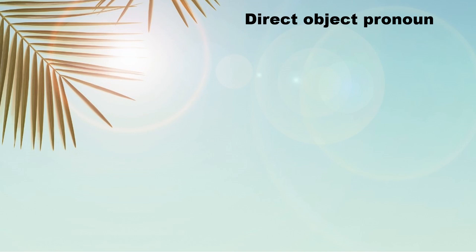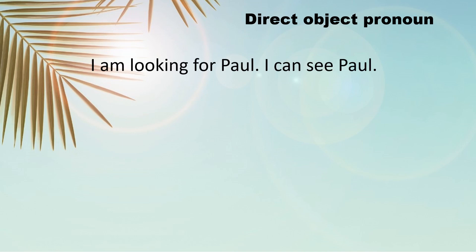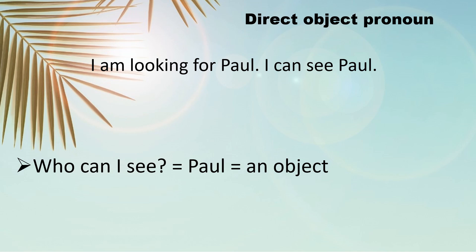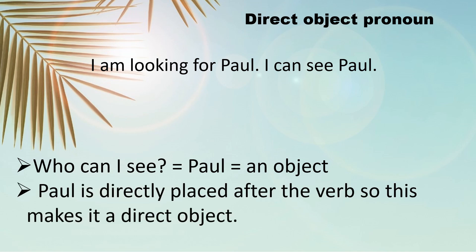We have two sentences here: I'm looking for Paul. I can see Paul. You can obviously notice a repetition of Paul. So to avoid that repetition, we are going to use a pronoun — him. I can see him. It's an object pronoun because the object Paul is directly placed after the verb with nothing between 'see' and 'Paul', making it a direct object pronoun.